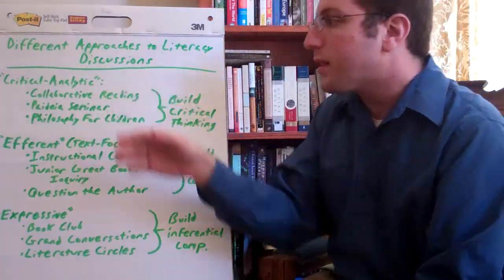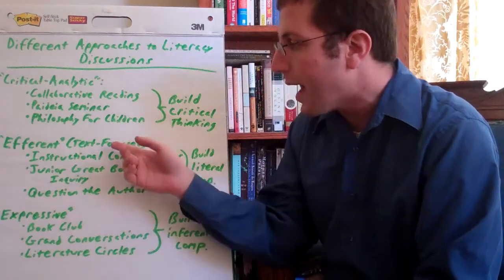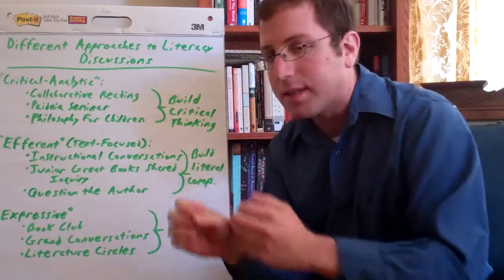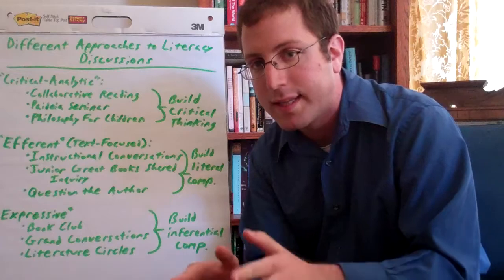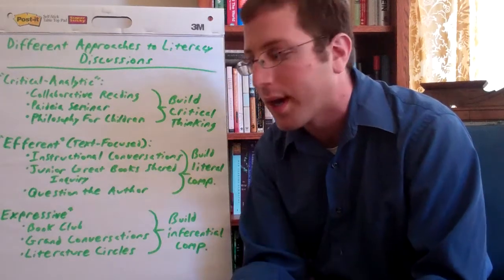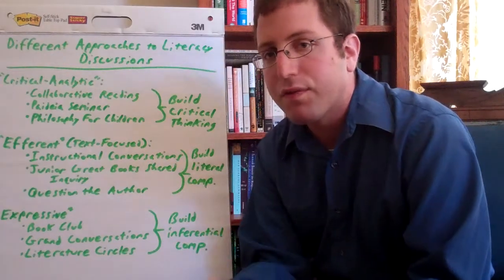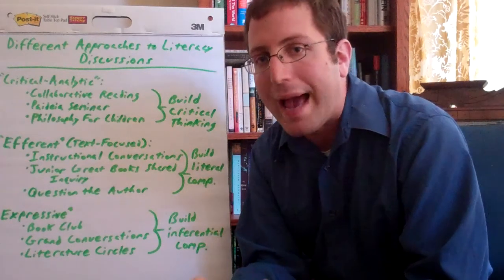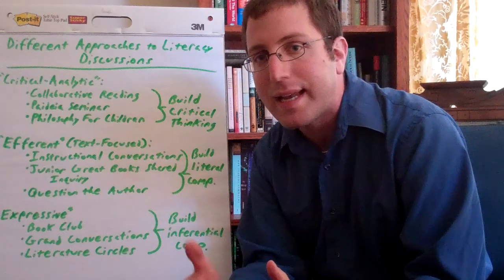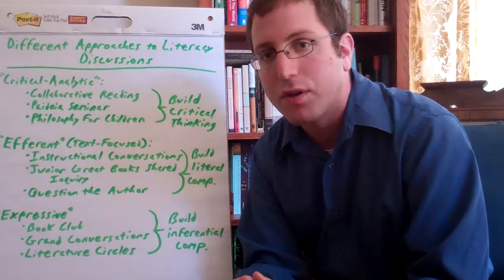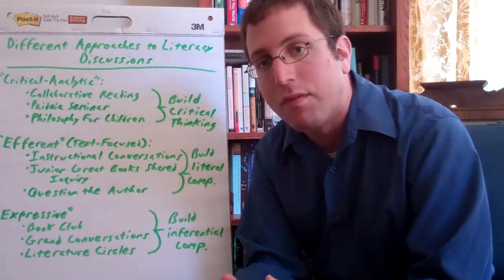The critical analytic group builds critical thinking, as you might expect from the title. The efferent or text-focused group really builds literal comprehension — text-explicit comprehension — what's going on in this story, being able to retell what's going on. And then the expressive group builds inferential comprehension, really being able to pull out what's read between the lines, think about what's not being said explicitly, but still deeply understand what might be happening on an emotional level in the story.